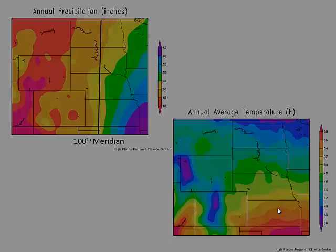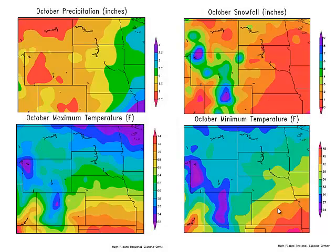Looking at our typical grazing season from October to March — that varies obviously every year and with different operations — October precipitation is about an inch and a half to two inches. Snowfall is pretty minimal; a lot of it comes as rain. We do get occasional snow events but it doesn't happen every year, so most of that precipitation is going to come in the form of rain.